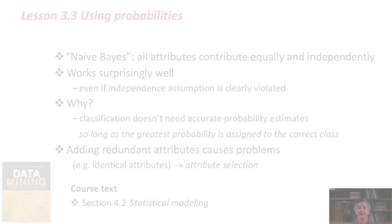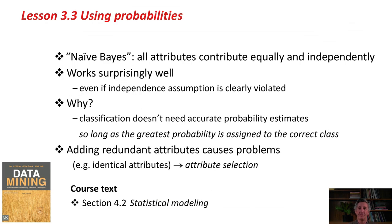That's the Naive Bayes method. The assumption is that all attributes contribute equally and independently to the outcome. It works surprisingly well, even in situations where the independent assumption is clearly violated. Why does it work so well when the assumption is wrong? That's a good question. Basically, classification doesn't need accurate probability estimates. We're just going to choose as the class the outcome with the largest probability. As long as the greatest probability is assigned to the correct class, it doesn't matter if the probability estimates are all that accurate.